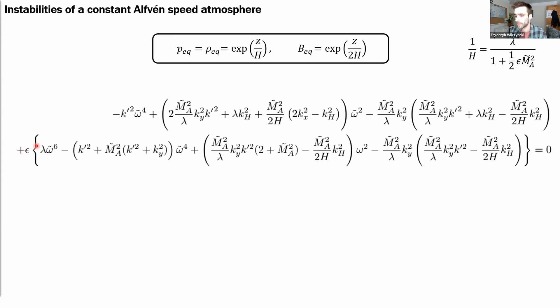point to take in is that all the terms on the bottom line are pre-multiplied by epsilon, which is the departure from adiabaticity, which is supposed to be small if we are to use the anelastic approximation.